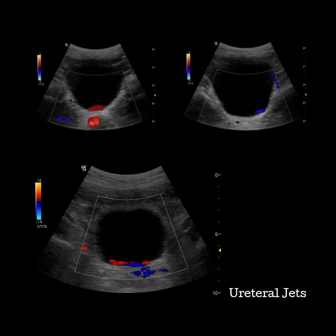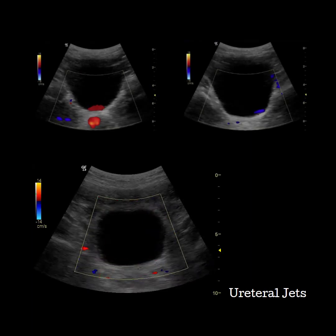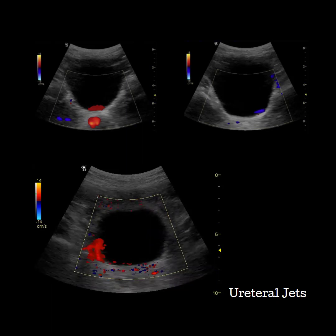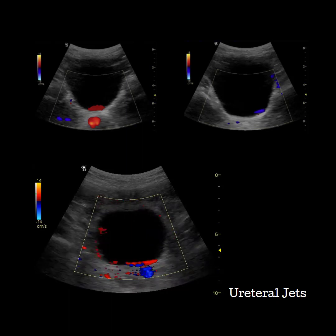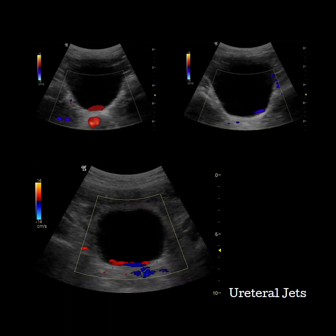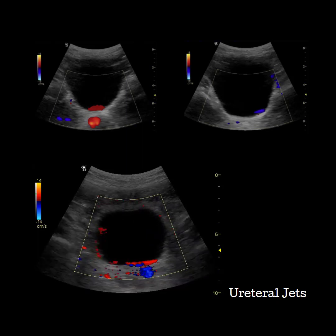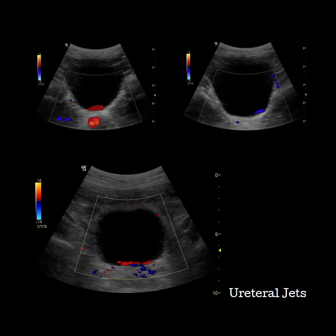Angle the transducer towards the trigone, or the inferior portion of the bladder — this is where the ureters connect to the bladder. Open your color box to cover the whole bladder and a little beyond. You should be able to see color in the iliac vessels on either side of the bladder. Holding this position, wait to see urine enter into the cavity. Both ureteral jets should typically be seen within a five-minute window.